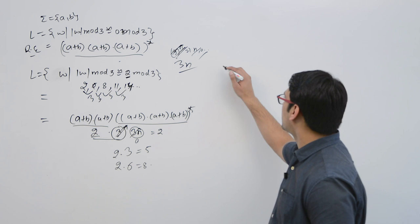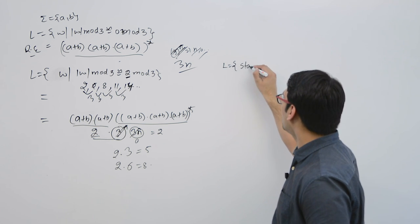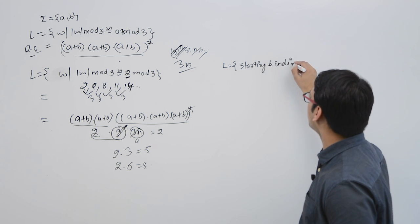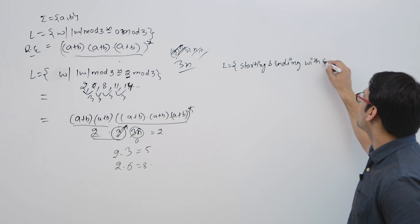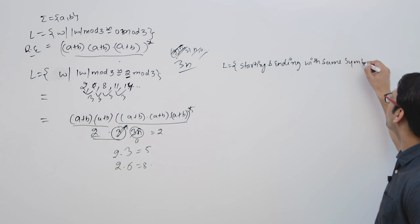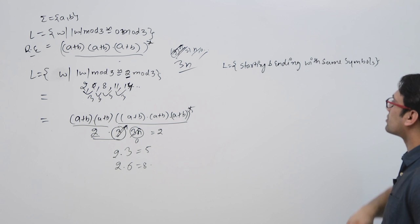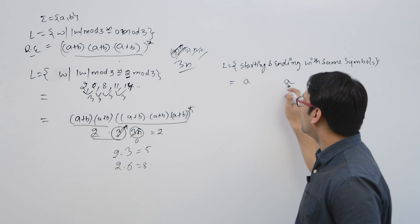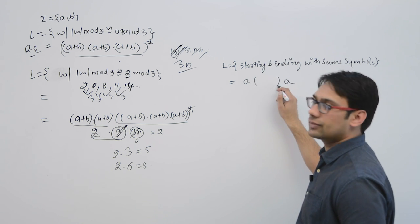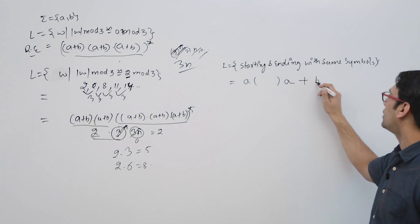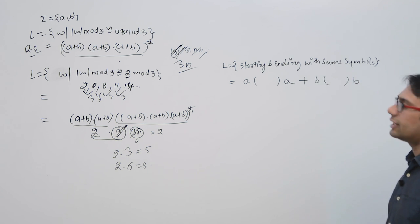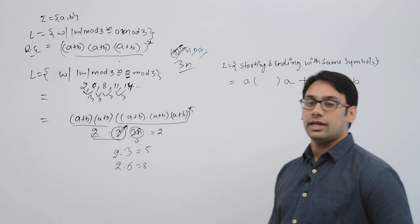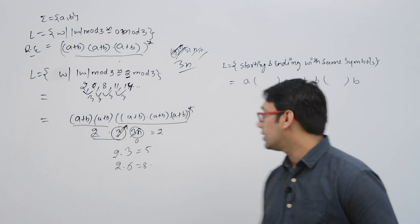Now let us consider the language of strings starting and ending with the same symbol. If a string starts with 'a' it should end with 'a', with anything in the middle. If a string starts with 'b' it should end with 'b', with any combination of a's and b's in the middle.